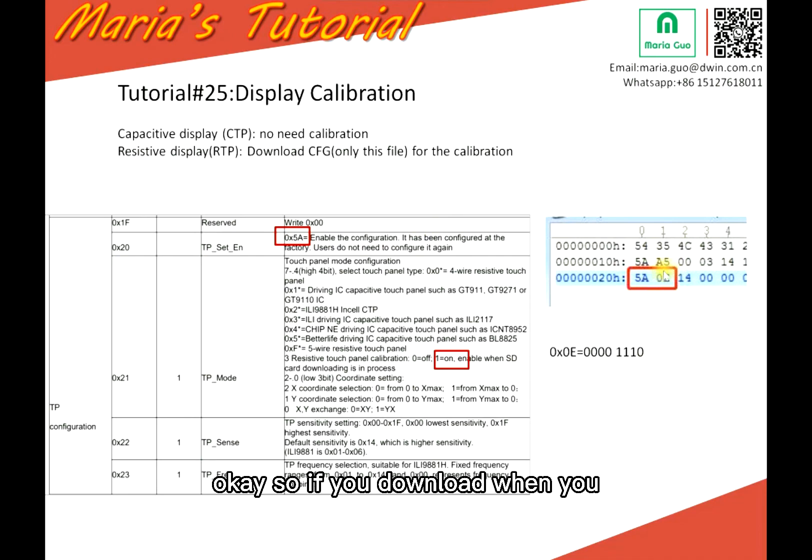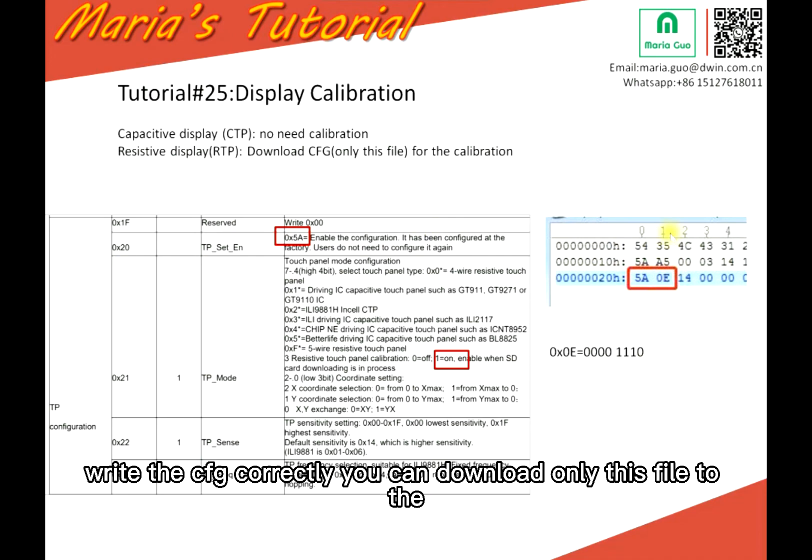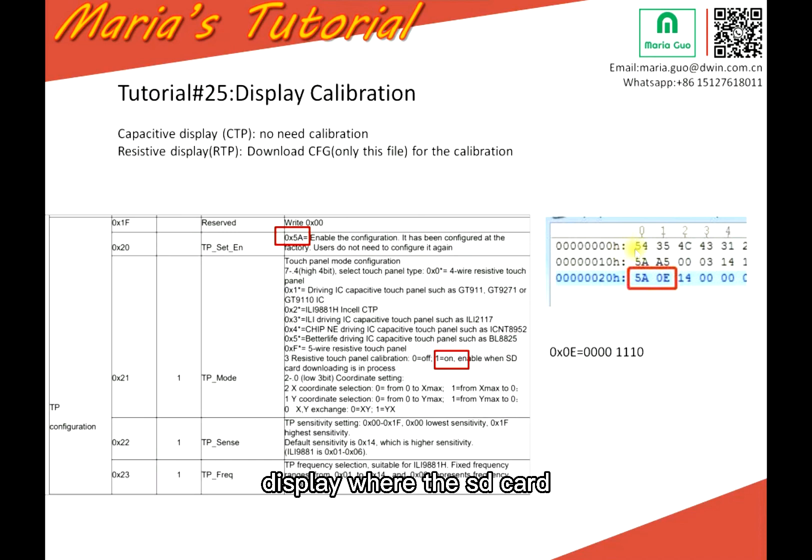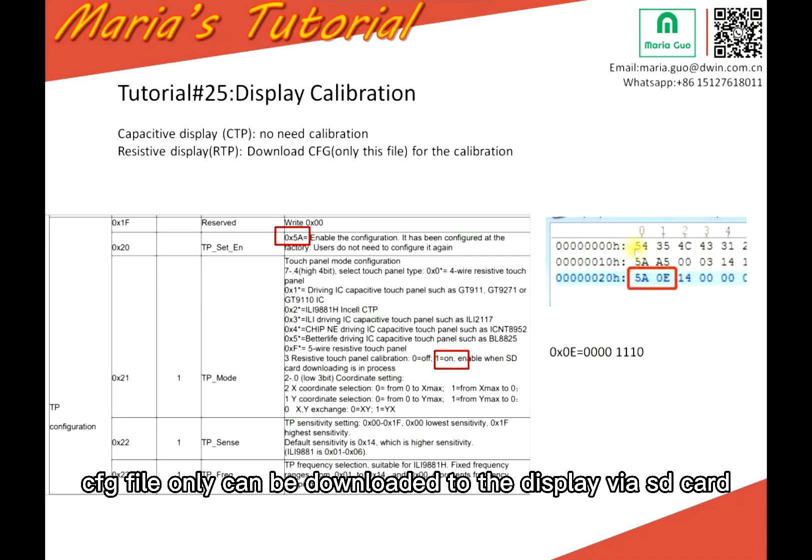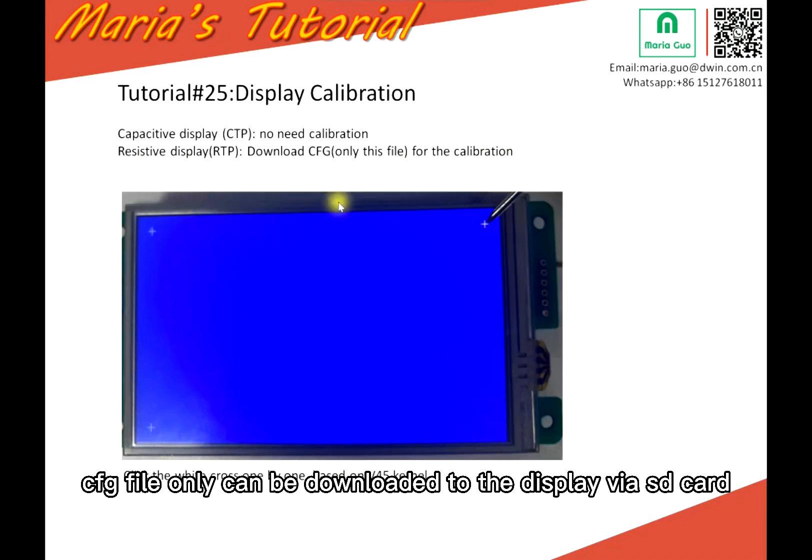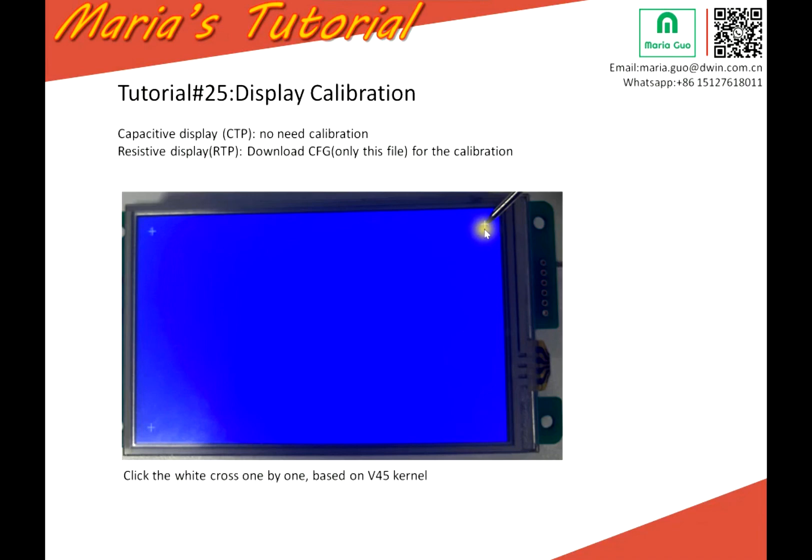So if you download, when you write the CFG correctly, you can download only this file to the display with SD card. When you download it, so here, this is the cross. Cross will be shown up one by one. And you should press it one by one. This is how to calibrate it.